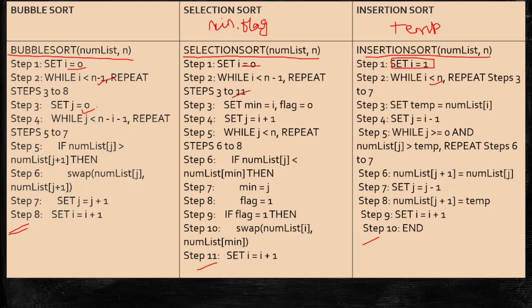In step 3, bubble sort, j equal to 0. One more thing you have to remember, whenever you are setting the i, immediately while loop is coming. Everywhere you can see the pattern. The same way, here set j equal to 0, j is less than n minus i minus 1, repeat step 5 to 7. After that, you are doing the comparison, whether swap is required or not. If numList of j is greater than numList of j plus 1, then swap. Then set j equal to j plus 1, i equal to i plus 1. Very simple for the bubble sort.